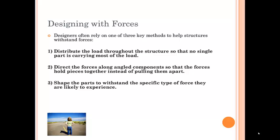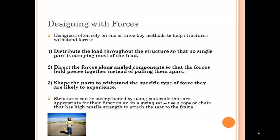Lastly, they try to shape the parts to withstand the specific type of force they are likely to experience. Structures can be strengthened by using materials that are appropriate for their function. So in a swing set you want a rope or a chain that has a high tensile strength, so that when the kids swing those ropes and chains stay solid and don't break.